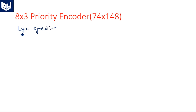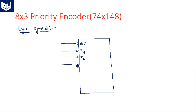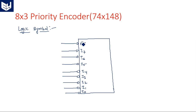The logic symbol of the 8-by-3 priority encoder is very important. Unlike normal encoders, we have some additional output pins. There is an enable input pin, and all the inputs and outputs are active-low. There are 8 input pins: I7, I6, I5, I4, I3, I2, I1, and I0.